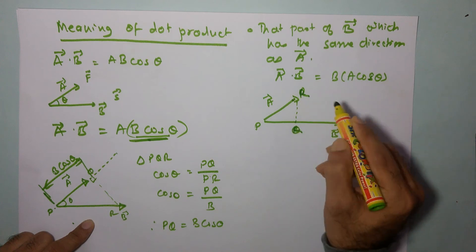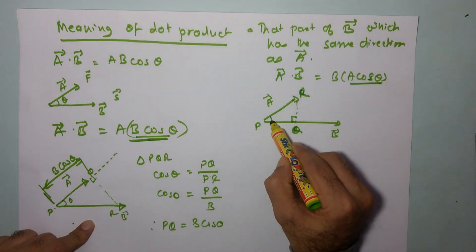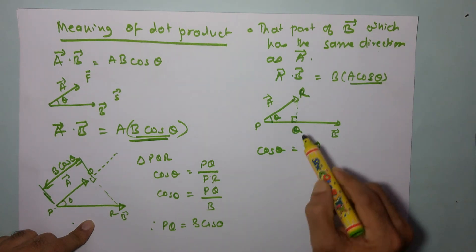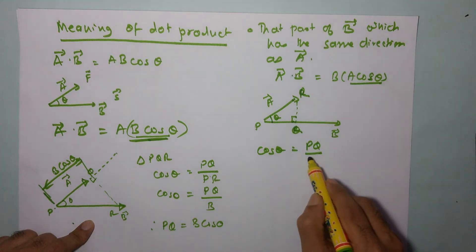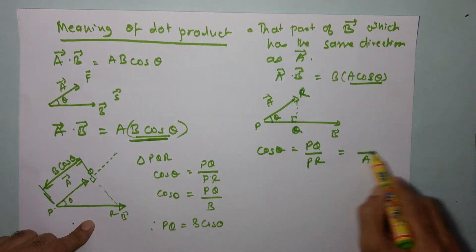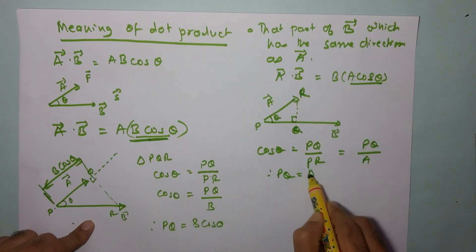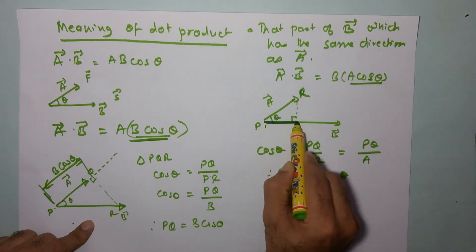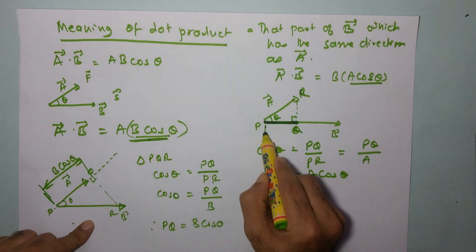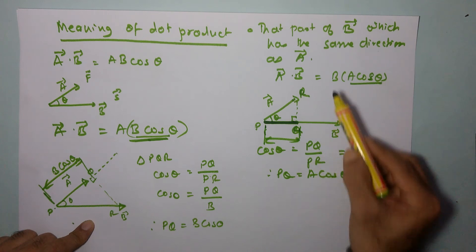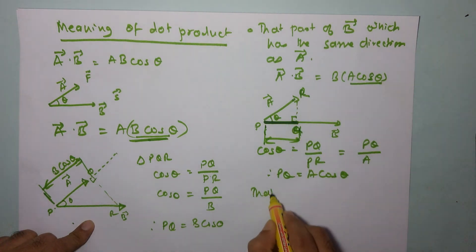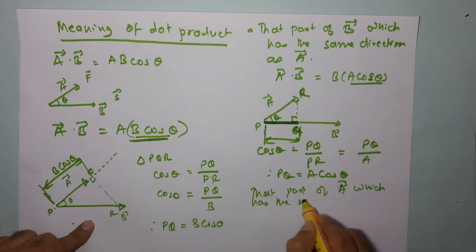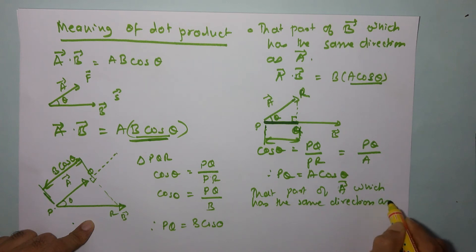This angle is 90 degrees. So what is a cosθ? If this is theta, then cosθ equals the adjacent side over the hypotenuse. Here PQ is the adjacent side and PR is the hypotenuse, which is the magnitude of vector a. Therefore, PQ equals a cosθ. And again, what do we see? a cosθ is that part of vector a which has the same direction as vector b. When I multiply b by (a cosθ), I am multiplying the magnitude of vector b by this magnitude — two vectors in the same direction.